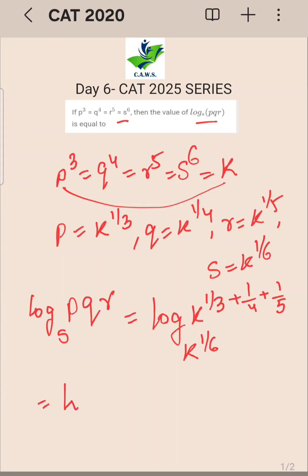So sabkuch K ke terms me ho gaya. So this becomes log of K raise to, you will take the LCM of 3, 4, 5 which is 20. Sorry, 3, 4, 5 is 60. So this will become 20 plus 15, 4 za is 60 plus 5, 12 za to the base 60.